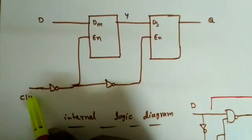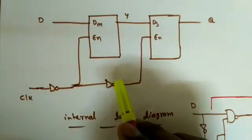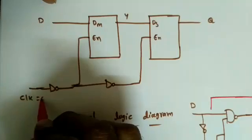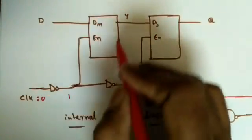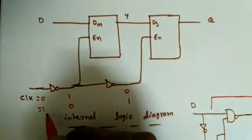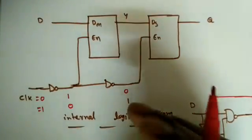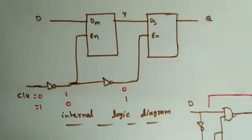We can also make a positive edge-triggered D flip-flop. The block diagram uses two extra inverters. After the clock we use one inverter whose output goes to the master's enable, and one more inverter after that goes to the slave's enable. When clock equals 0, the master is enabled and the slave is disabled. When clock equals 1, the slave is enabled and we get the output — so this is a positive edge-triggered flip-flop, producing output when clock transitions from 0 to 1.